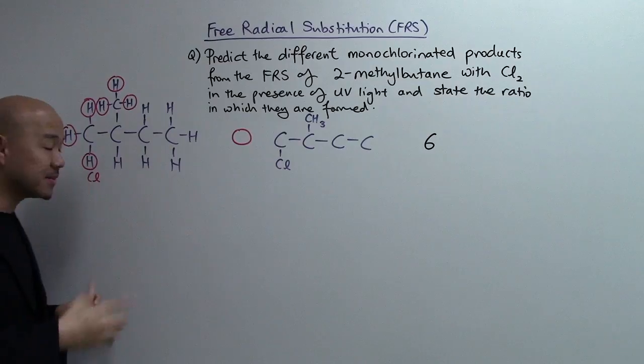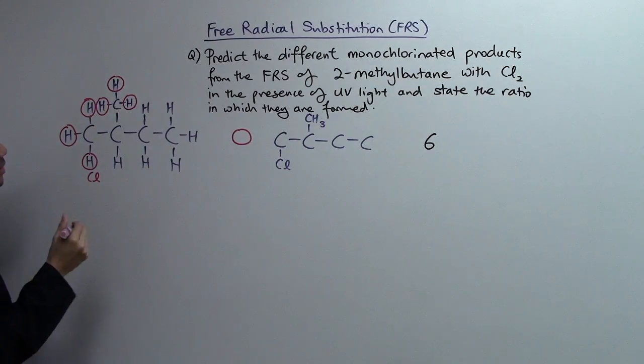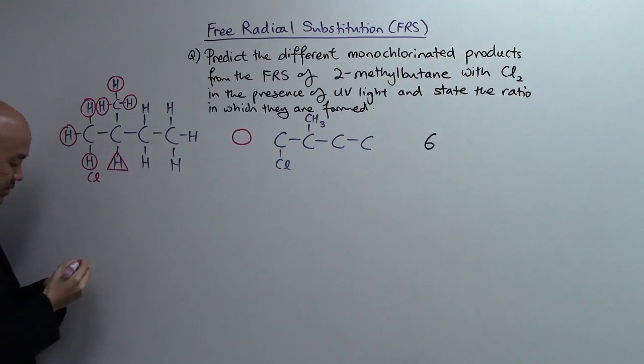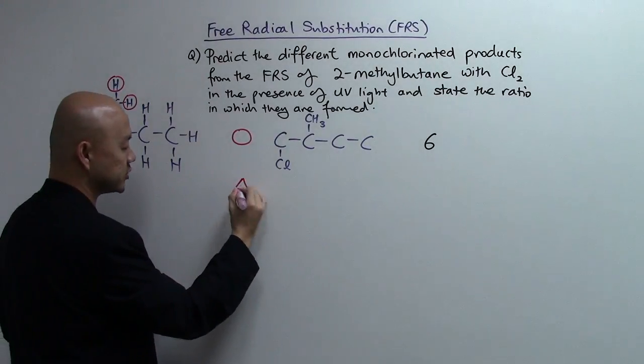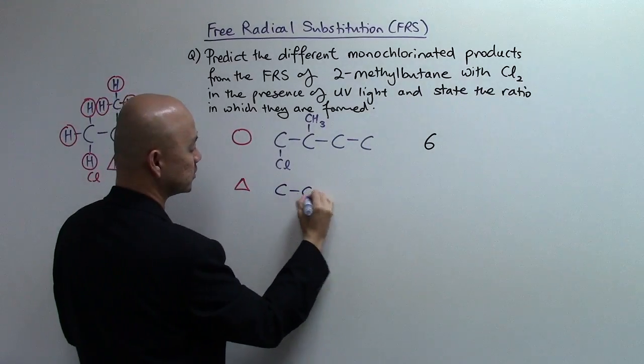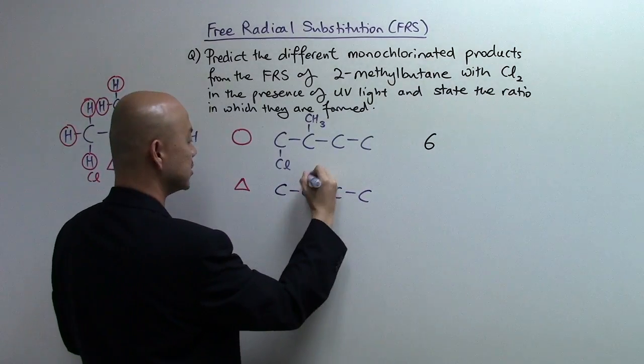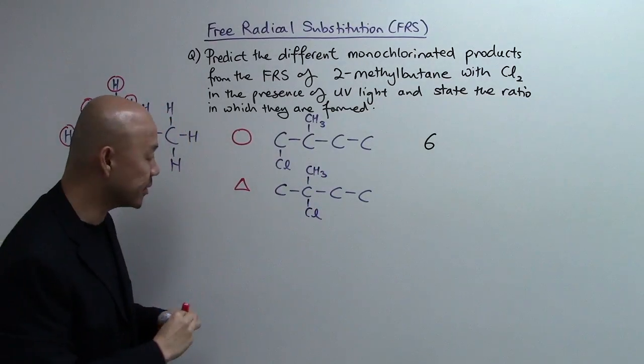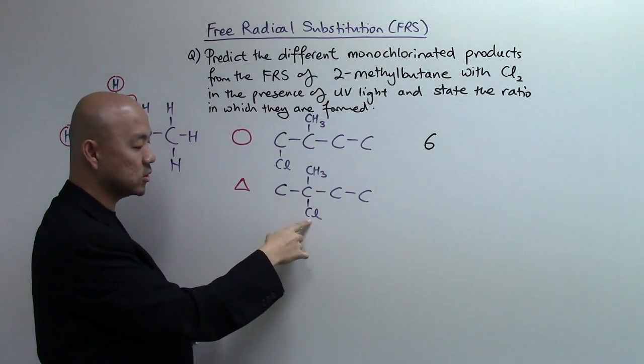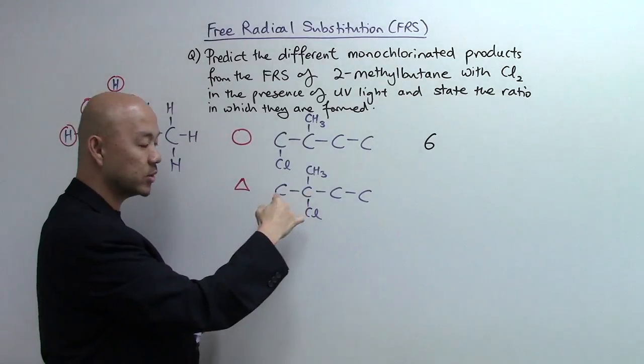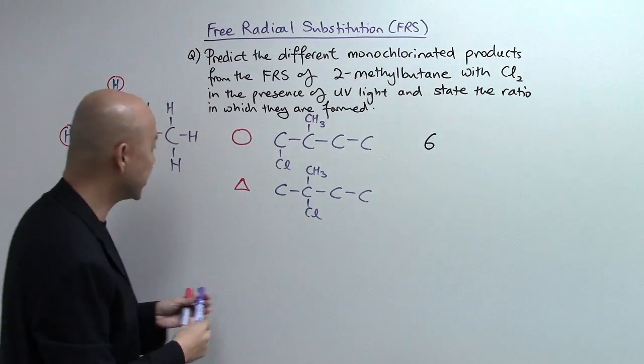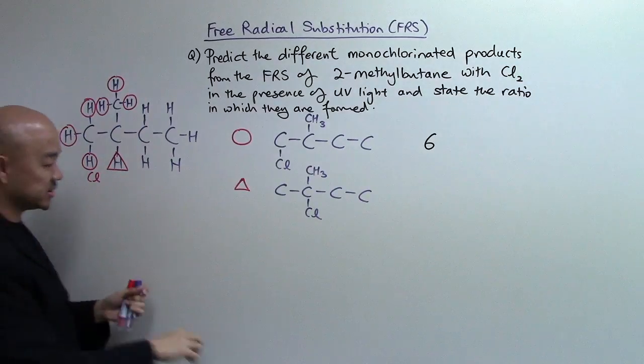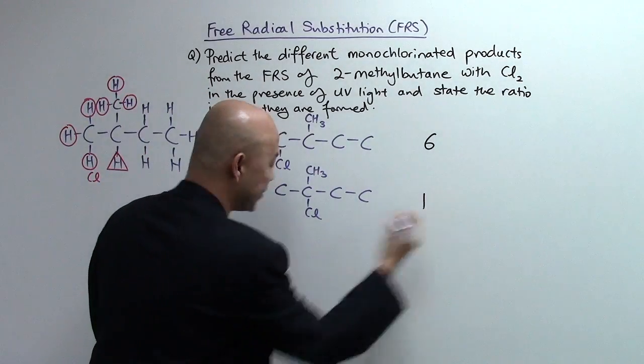Now I'm going to use different symbols to show you the different isomers that are formed. Alright, so I'm going to use a triangle for this. So if I use a triangle the product will look like this: 1-2-3-4. The methyl is still here. The chlorine is here. Alright, so this we'll call it 2-chloro-2-methylbutane. Alright, and the ratio it can be formed, there's only one triangle as you can see. So that is one.